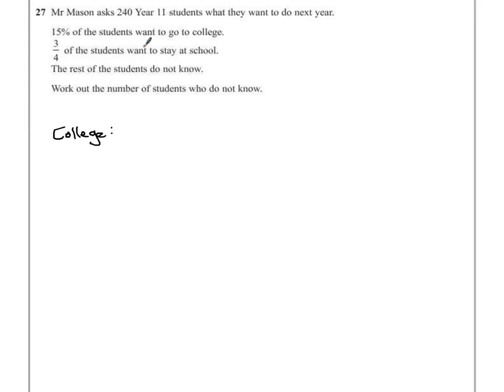So to work out 15%, it's much easier if we work out what 10% is, then 5% and add the two values together. Ten percent of 240, if we divide by 10, that gives us 24 students.